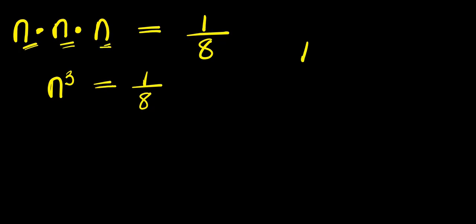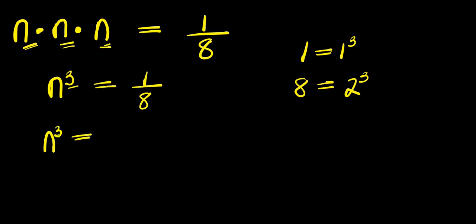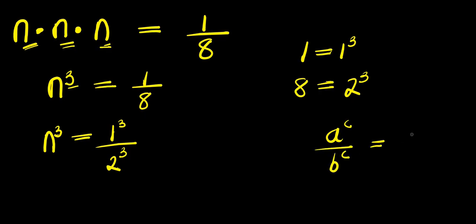I can express 1 as 1 cubed — that is the same thing. And 8 I can express as 2 cubed, because I want the exponent to be the same. So I have n cubed equals 1 cubed divided by 2 cubed. If you have a to the power c divided by b to the power c, this equals a divided by b, raised to the power c.